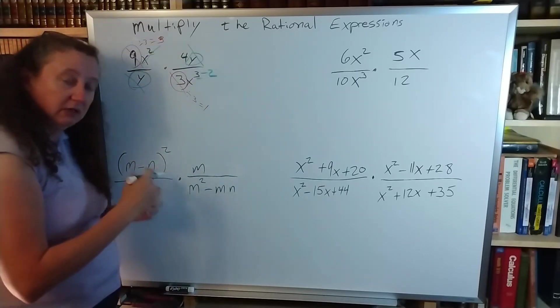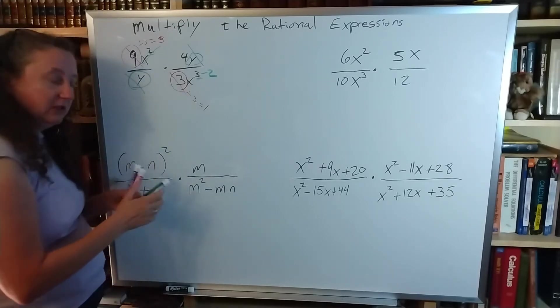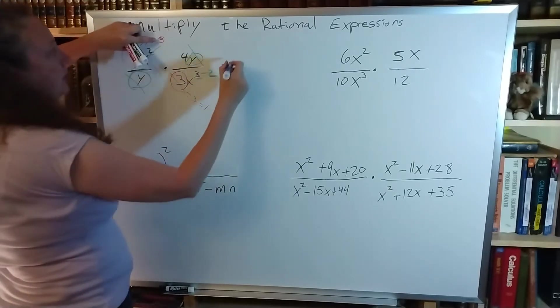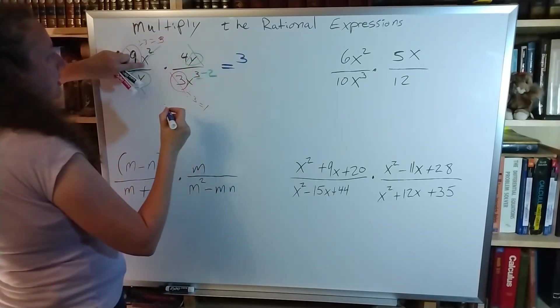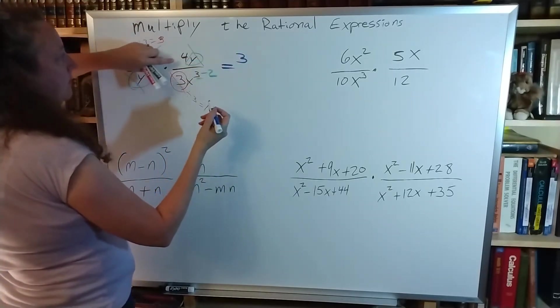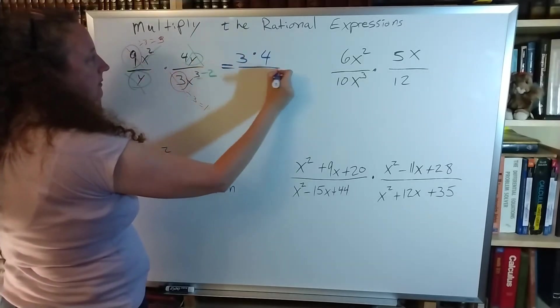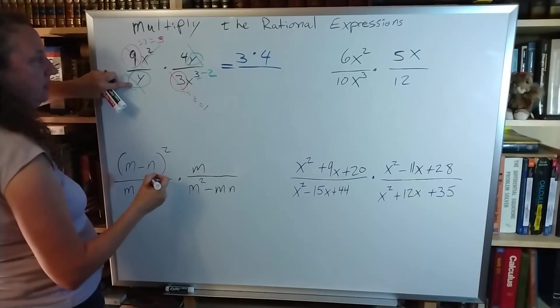It's a little bit messy, I need to rewrite things so I can see what I'm actually dealing with now. So I have that 9 became a 3. The x squared is gone. I still have the 4 there. The y is gone. On the bottom, the y is gone.